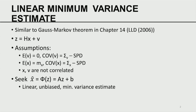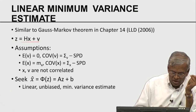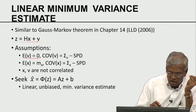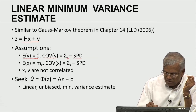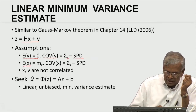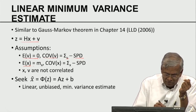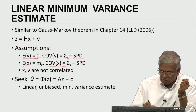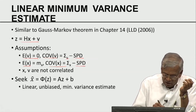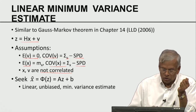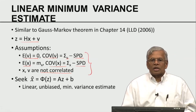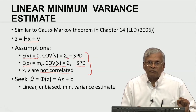Linear minimum variance estimation is something similar to the Gauss-Markov theorem. The Gauss-Markov theorem essentially relates to least square estimates. Let z = Hx + v. The assumptions are: the noise has mean zero, the covariance of the noise is Σ_v which is SPD. x is random with a prior distribution having mean m_x and covariance Σ_x that is SPD. x and v are not correlated. These are the basic assumptions to formulate our estimation problem.